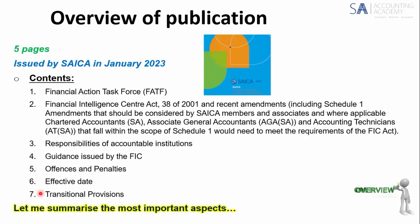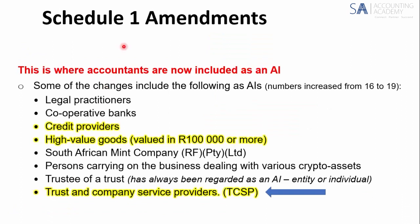Schedule 1 sets out a list of all the accountable institutions — who are regarded as AIs. This is the list that now includes us as accountants as an AI. Some of the changes: the numbers have gone from 16 to 19, and you'll see credit providers are included. Although the National Credit Regulator is not a supervisory body of FIC yet, they will need to be. At the moment, IRBA is a supervisory body of FIC, so auditors would then be monitored by IRBA in their capacity as a supervisory body of FIC.